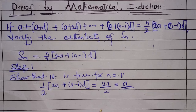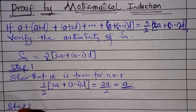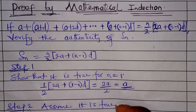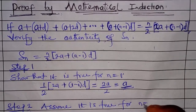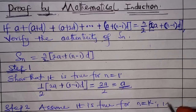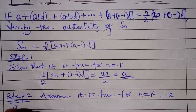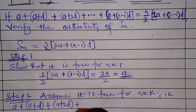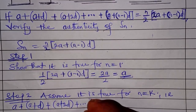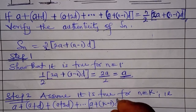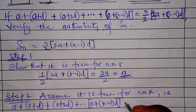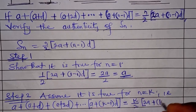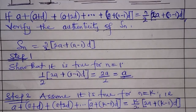Having shown it is true for N equal to 1, Step 2 says we should assume it is also true for some integer N equal to K. That is, A plus A plus D plus A plus 2D plus A plus K minus 1 times D equals K over 2 into 2A plus K minus 1 times D. In Step 2, in place of N we simply write K.